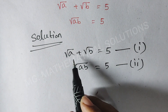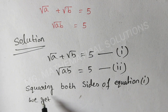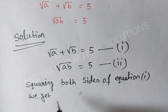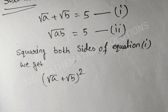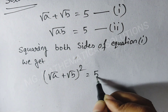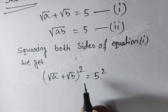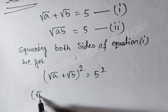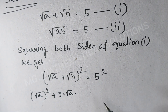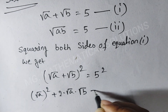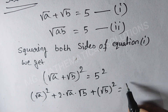First, we square both sides of equation 1. Squaring both sides we get (root a plus root b) whole square equal to 5 squared. Now we use the formula (a plus b) whole square, so root a whole square plus 2 times root a times root b plus root b whole square equal to 25.